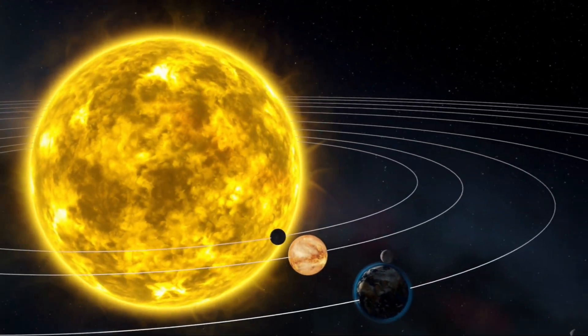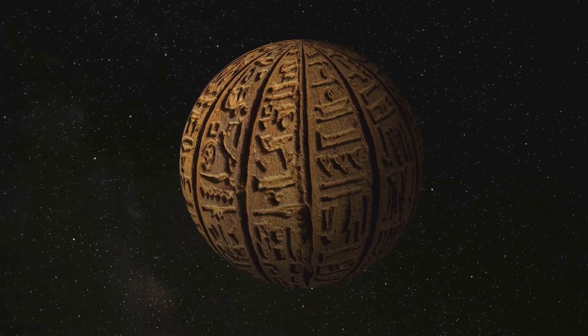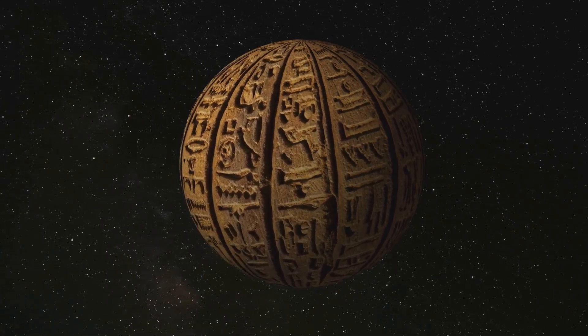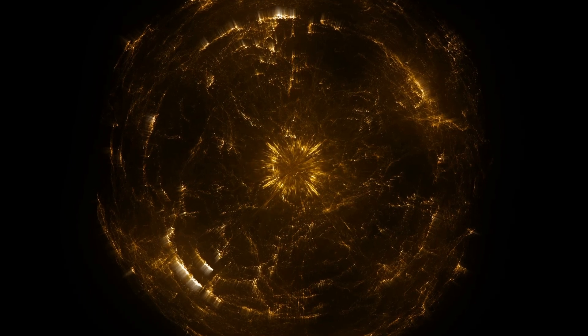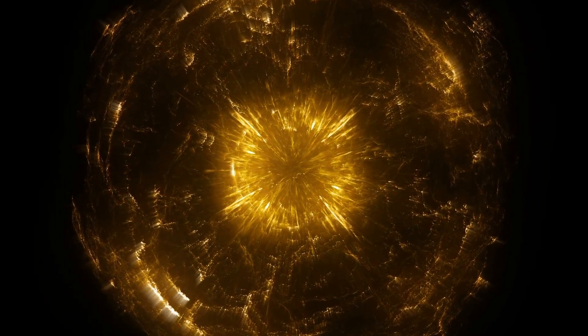According to the uniplanetary evolution theory, it proposes that in the future, Earth will become Mars, and similarly, Jupiter will transform into Saturn. This theory may sound like a grand leap of imagination, but it's grounded in a profound understanding of our universe and its cyclical nature.